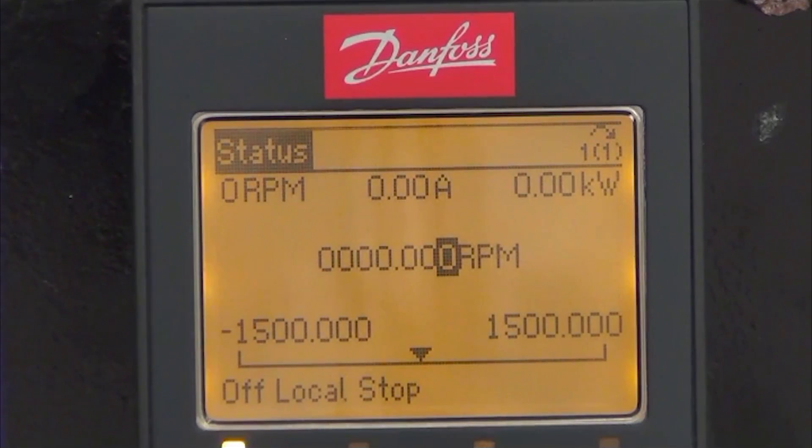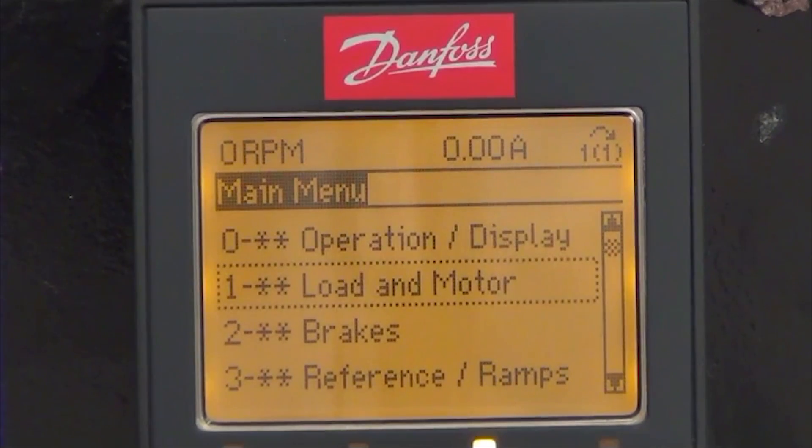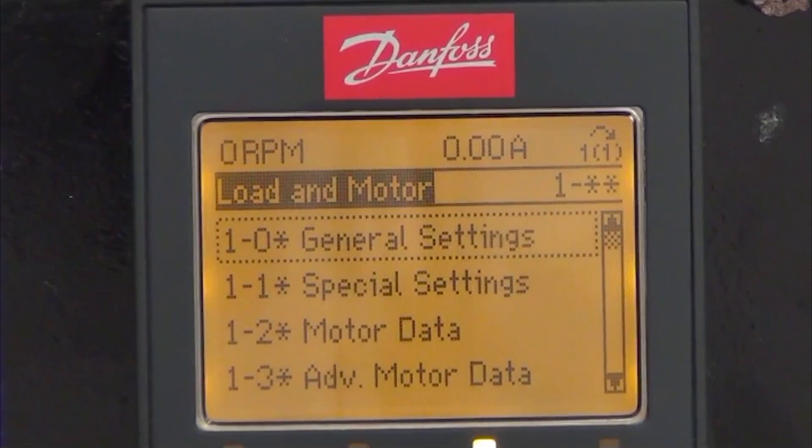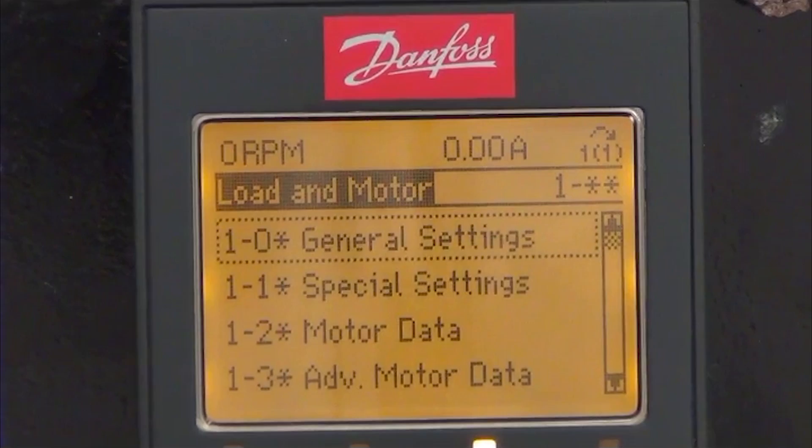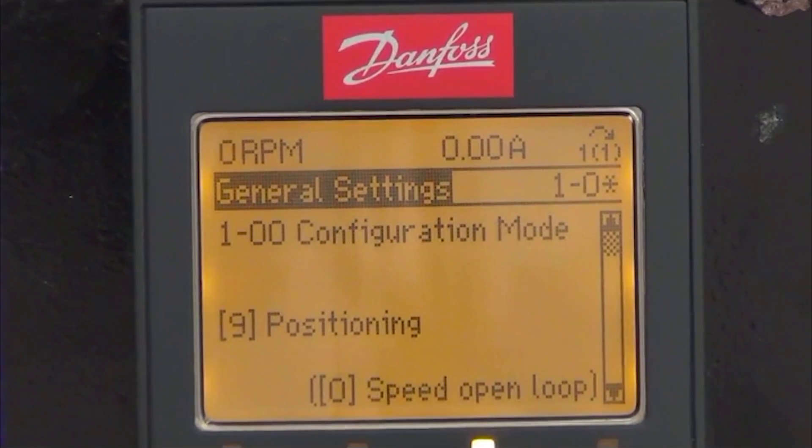First step is to set up the drive for basic positioning using the local control panel to control the drive. I have prepared the drive by setting up all motor data and optimized the drive for the motor. Everything else is default settings. First, I will go into the main menu, select group 1, load and motor, then general settings. The first parameter here configures the way the motor is controlled. Default is speed control. I will select positioning, press OK.